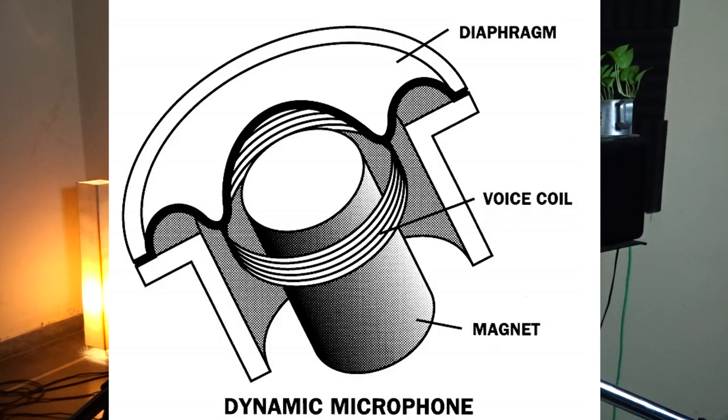Let's understand how a dynamic microphone works. In any dynamic microphone, there are three parts: one is the diaphragm, one is the voice coil, and one is the magnet. The magnet is permanently charged, and when a sound wave hits the diaphragm, it vibrates the voice coil, which converts those vibrations into electrical signals.